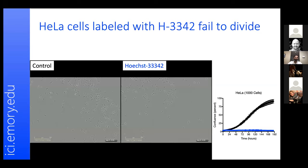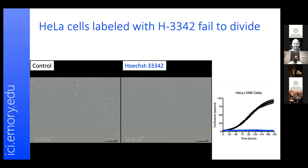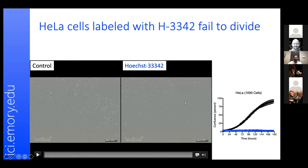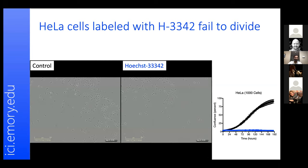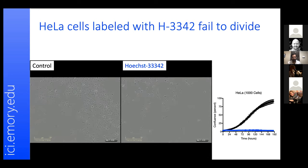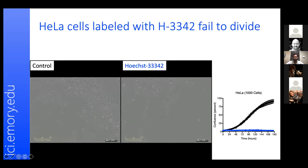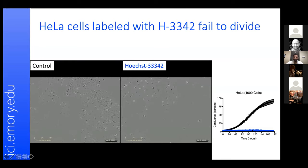Let's look at the use of Hoechst directly. HeLa cells were labeled with Hoechst 33342 on the right side, and controls with no dye on the left side, then allowed to grow for seven days. The title gives you the answer: on the right, HeLa cells fail to divide, whereas on the left they are dividing perfectly fine. When quantified, control cells continue to grow normally while Hoechst-treated cells fail to divide.